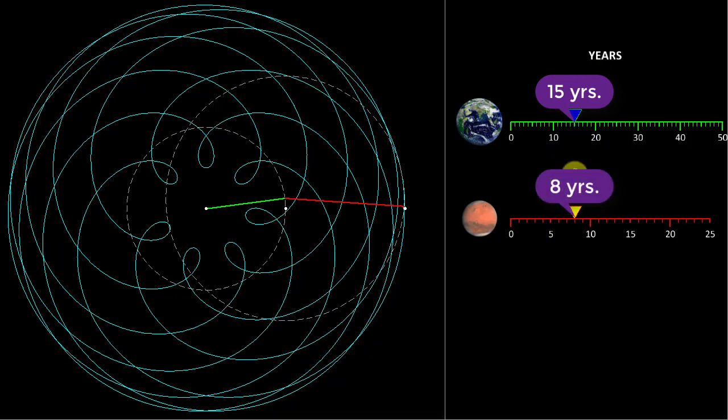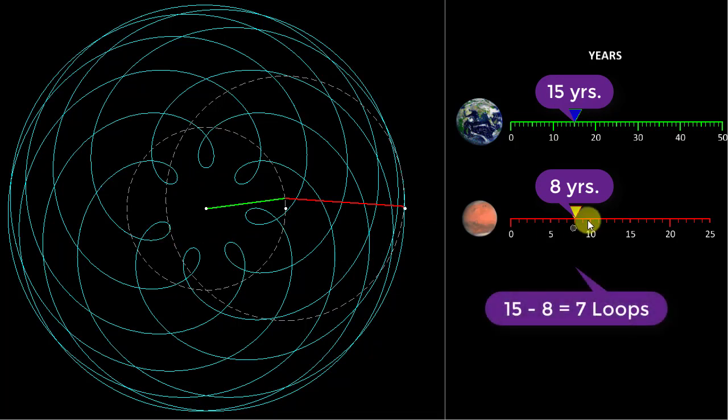So, 15 earth years or 8 Mars years later, we seem to have completed the path. And see how many loops it has formed, 1, 2, 3, 4, 5, 6 and 7. 7 loops, 8 Mars years, 15 earth years have passed by.